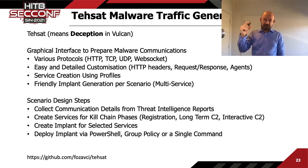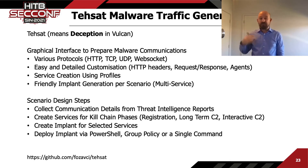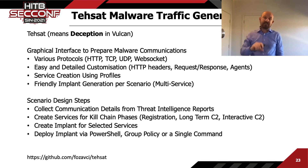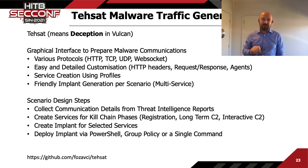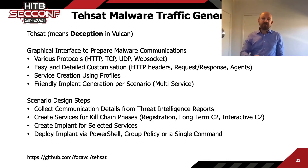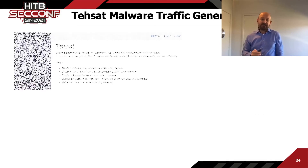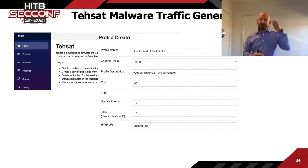Scenario design steps are simple: find the threat intelligence report, read and understand it, replicate the kill chain phases, then generate traffic using profiles. The interface offers profile generation, service generation, and per-profile options including port, URI type, data content, HTTP headers, and user agents. Every part of the HTTP request can be an indicator of compromise — you can encode data in user agents or in the content body. Profiles serve as templates to fork multiple services without repetition.